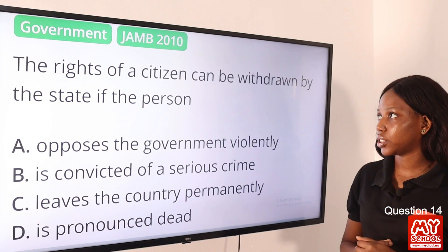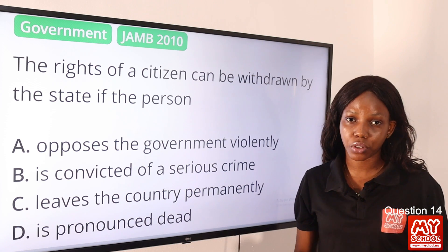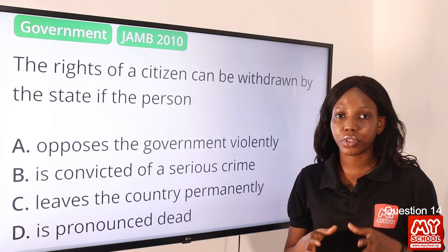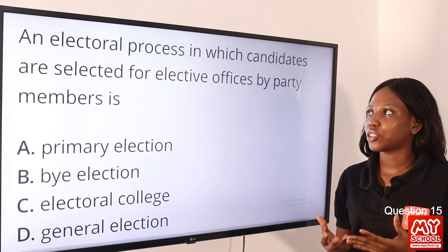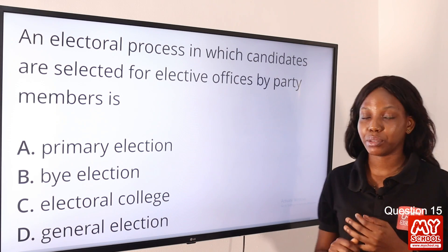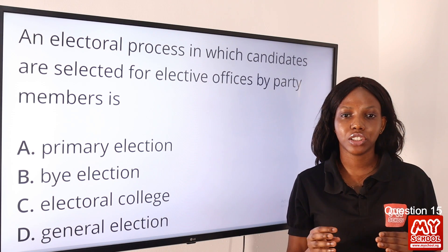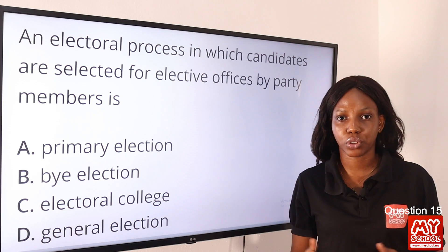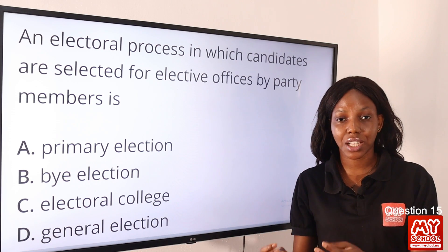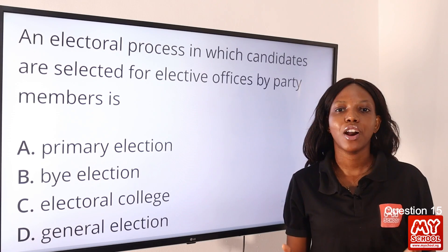Question 14 and 15: The rights of a citizen can be withdrawn by the state if the person is found guilty of a serious crime or is convicted of that crime — the answer is option B. Question 15: An electoral process in which candidates are selected for elective offices by party members is a primary election. In a presidential election, each political party selects candidates to represent the party and run for the office of president. That selection process is called the primary election. So option A is the final answer.